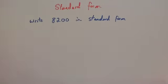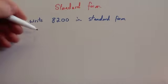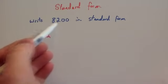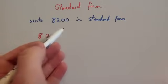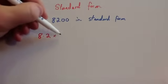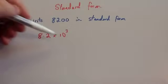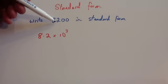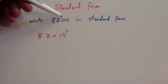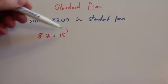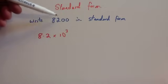Write 8,200 in standard form. Remember, we've got to have a number between 1 and 10. Because we've got an 8 and a 2 at the front, we're going to use 8.2. And then we want to make it 8,200. So to get from 8.2 to 8,200, we'd have to times it by 1,000, so we'd times it by 10 cubed, because 10 cubed is 1,000 — this has to always be a power of 10. Notice that if our decimal place had started here, we'd have moved it 1, 2, 3 places to get to the end of the number. So you would use 8.2 times 10 cubed, and notice the connection between the 3 and how many times you'd move the decimal point to get the number you started with.